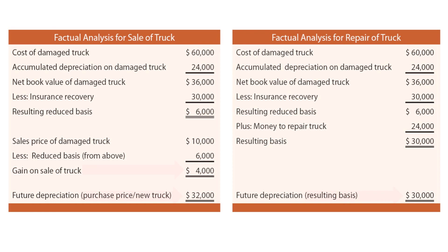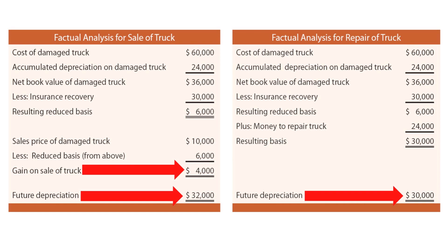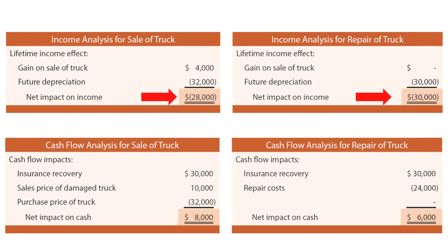Looking at our financial accounting statement outcomes: selling the truck triggers a $4,000 gain and $32,000 of future depreciation, while the repair triggers $30,000 of future depreciation. Net impact if we sell the truck is a $28,000 reduction in income; the repair option results in a $30,000 reduction — a $2,000 difference in accounting incomes, the same result as our simple relevant items analysis. The cash flow analysis confirms this: selling yields $30,000 from insurance plus $10,000 from the used truck minus $32,000 for the new truck, a net $8,000 inflow. Repairing yields $30,000 insurance less $24,000 repair cost, leaving only $6,000 — a less favorable outcome.